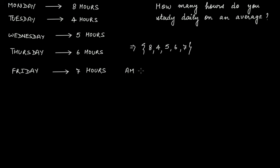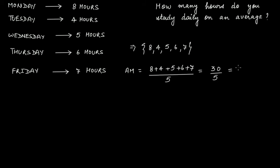In this case we have arithmetic mean. If we calculate it: eight plus four plus five plus six plus seven, divided by five values. Eight plus four is twelve, plus five is seventeen, plus six is twenty-three, plus seven is thirty. Thirty divided by five equals six. Six hours is your arithmetic mean — that is the average.